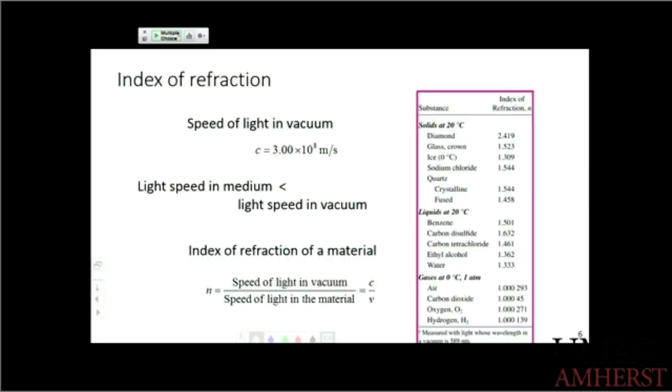So you can figure out what this is for a variety of mediums by experiment. Vacuum has index of refraction 1 because C is the speed of light in vacuum. The index of air is very close to 1, within a thousandth digit.